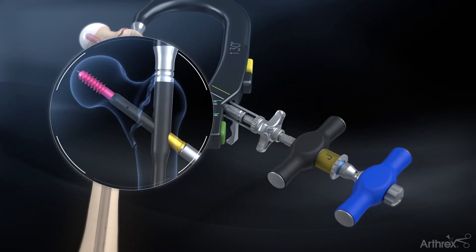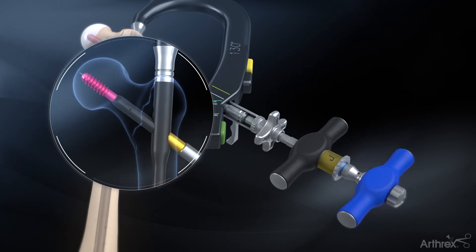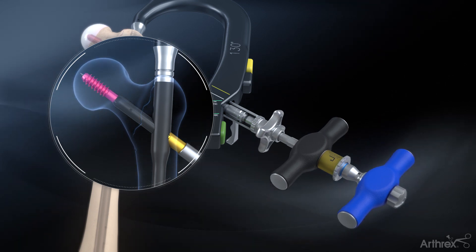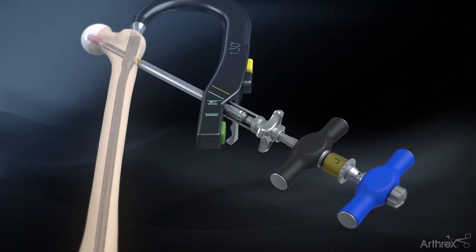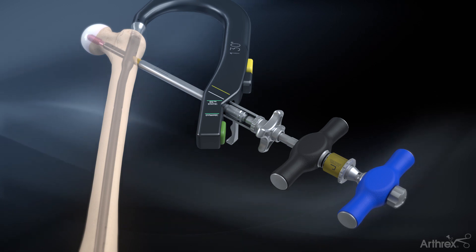For initial compression of the fracture, push the compression sleeve towards the targeting arm and rotate clockwise until the desired compression is achieved. Pull back on the gold knob and turn counterclockwise to disengage the blue handle and engage the black handle. The black line will now be showing.